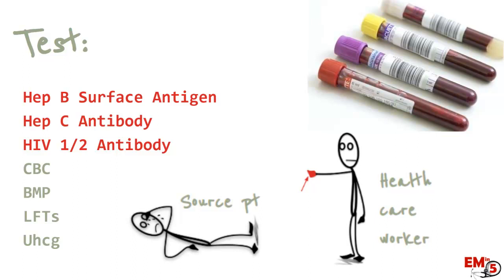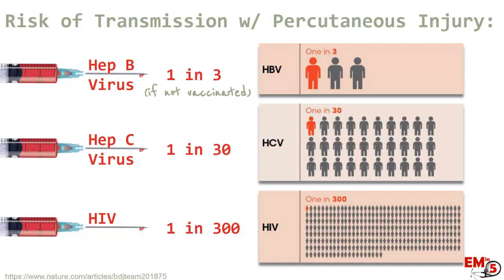The next thing to do is to take blood, and you want samples from both the healthcare worker coming to you and the source patient if available. Things you want to draw specifically are the hepatitis B surface antigen, the hepatitis C antibody, and the HIV 1 and 2 antibody. Here's information you can share with your patient about their risk of transmission of these diseases.